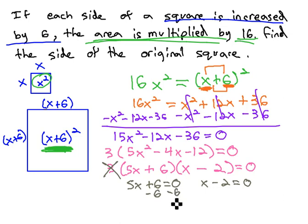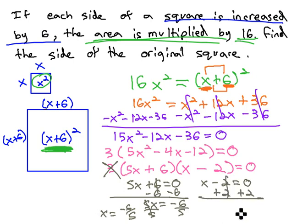We can solve the first equation by subtracting 6. 5x = -6, and then divide both sides by 5 to get x = -6/5. The other equation, add 2 to both sides, and x = 2.